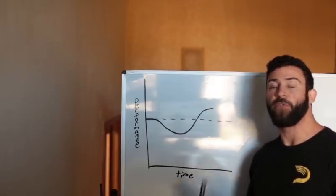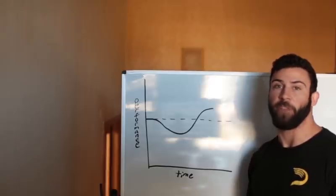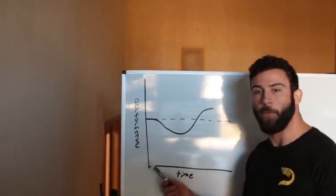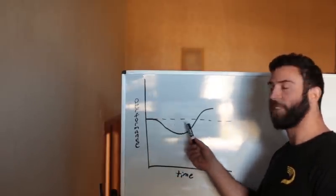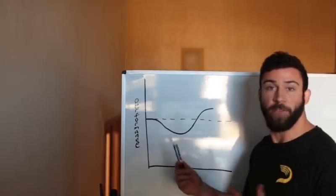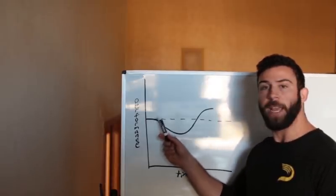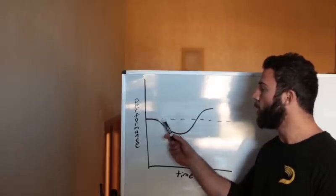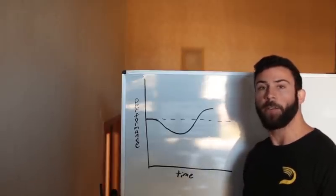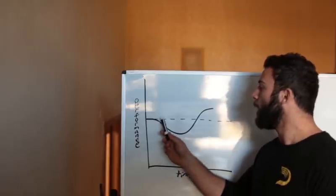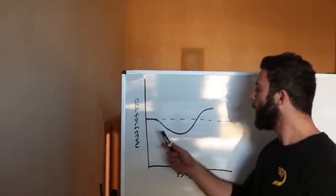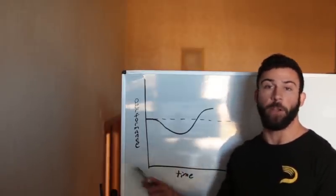So the first thing we're going to need to talk about is the strength recovery adaptation graph. On the bottom here we've got time and on the side we've got performance. This dashed line is basically your baseline for performance — right here you're just running a baseline because you haven't done anything. Then you perform some sort of training exercise or stimulus, and you're going to get worse immediately at whatever you're training for. Training works by breaking down whatever you're doing. So if this is like a bench press, you bench a whole lot and then the next few days you get worse at doing whatever you're doing.